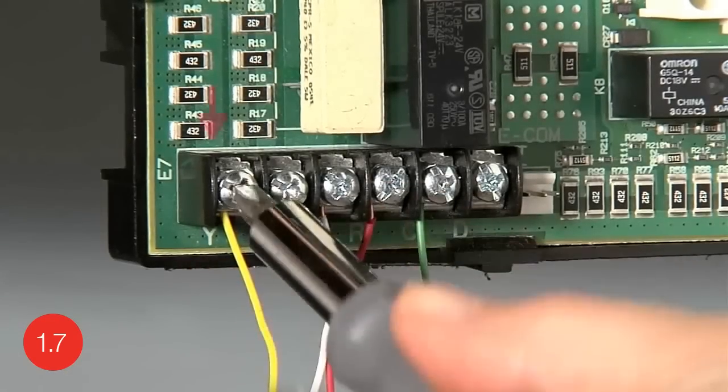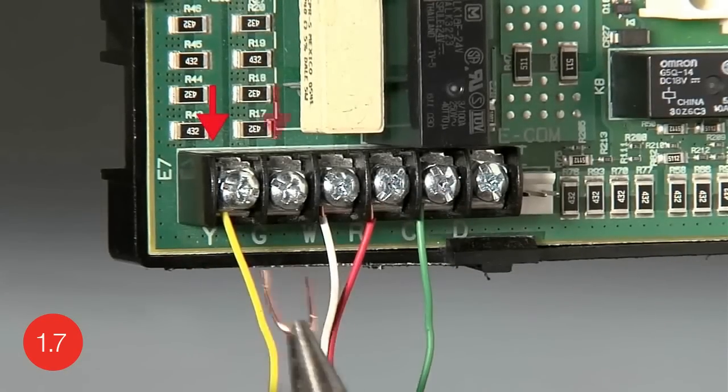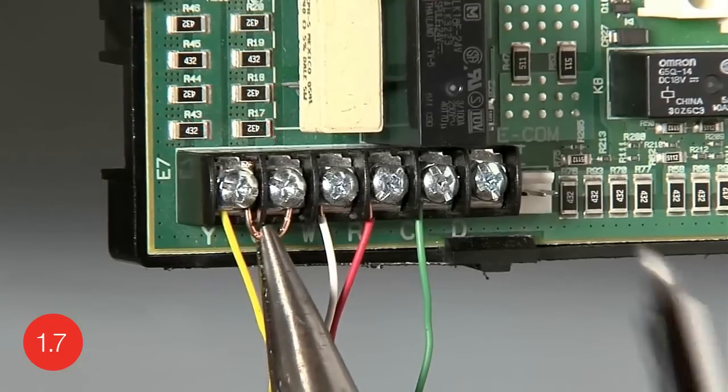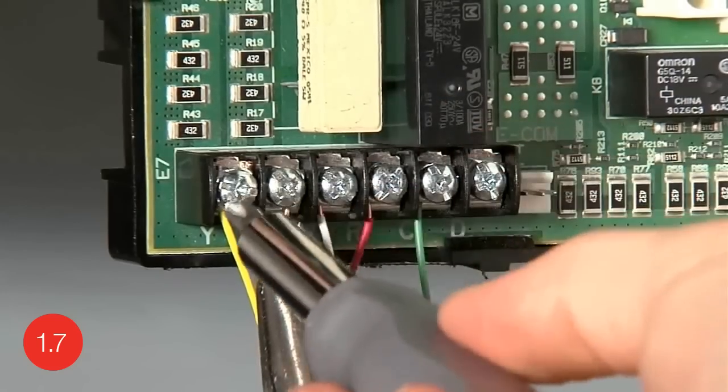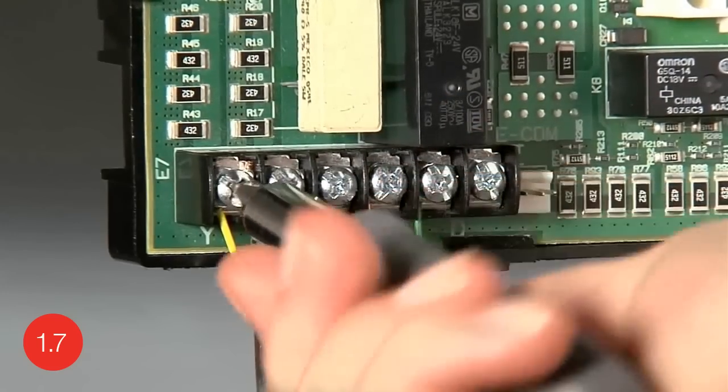For your system to function properly, you will also need to run a jumper wire from the Y terminal to the G terminal at the terminal block. If you do not have a jumper wire, you can make one out of 18 gauge wire, which can be found at your local hardware store.